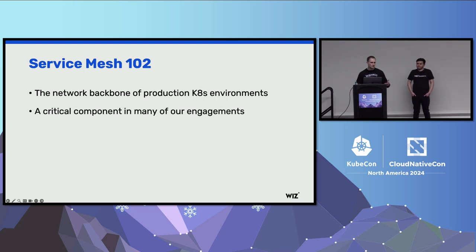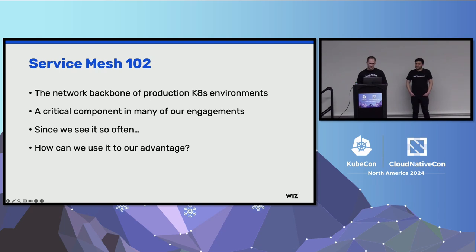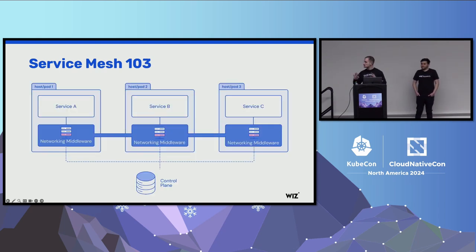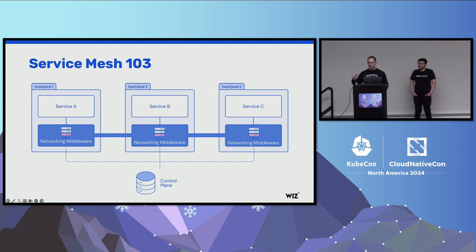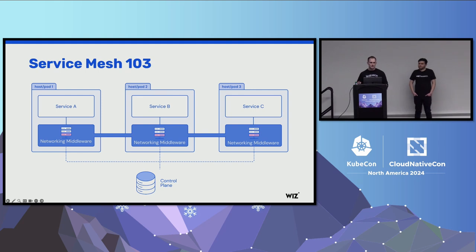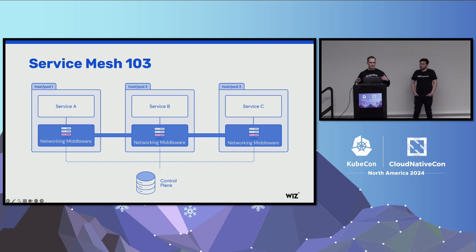So we figured that if we see them so often, we need to find a way to take them to our own advantage. Getting a bit more technical, this is a general blueprint of how a service mesh might be implemented. Essentially, each pod has some kind of a networking middleware, and the entire pod's traffic is redirected to that networking middleware into the mesh. Once the traffic is in the mesh, the user benefits from enhanced observability, enhanced security in the form of mutual TLS and other features. In our experience, this networking middleware is usually implemented using a networking sidecar container. Each pod spins up with another sidecar container that shares the network namespace with all of the other containers running on the pod, and using IP tables, the entire pod's traffic is redirected to that container and from there into the mesh.